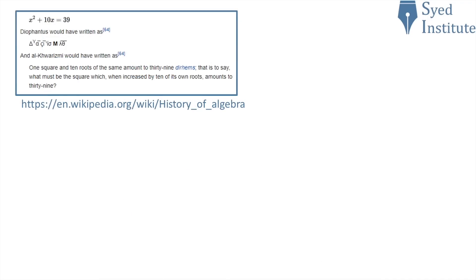If you look at the history of algebra, you'll see that in the past maths was written very differently to mean the same thing. A simple equation that looks straightforward today would have been written very differently before modern algebra came along. What we have today is a continuing evolution of how maths is written and presented. The fundamental maths does not change, but convention does — and because convention is not necessarily mathematically precise, we have to be very careful when we write mathematics.